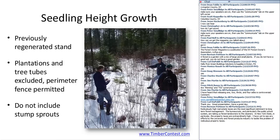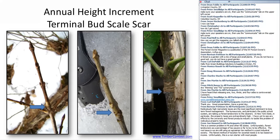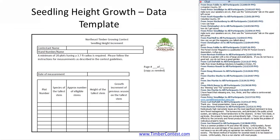Within those regeneration areas, you're going to put in 20 milacre plots — that's a thousandth of an acre, a 3.7-foot radius. Pick plots that have good stocking — an adequate number of seedlings. Then you're going to measure the annual height increment on the tallest seedling in each plot. What you're looking for is the terminal bud scale scar. Once you identify that on a hardwood or conifer, you measure this height increment. This is a category you could still enter this year and make a submission, as it's essentially measuring last year's growth, and is the one category that does not require measurements at two points in time.